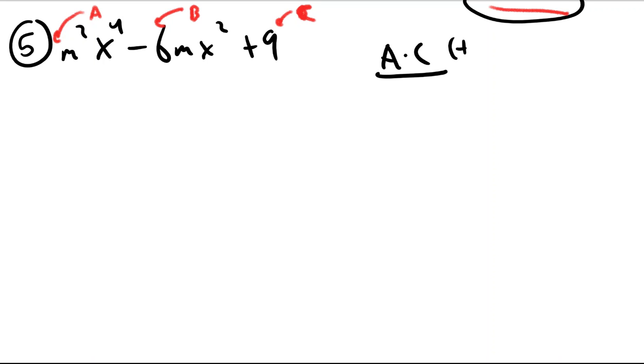I'm supposed to find two numbers that multiply to give me whatever A times C is. And A times C would be 9 in this question, 1 times 9. But add up to B, which is negative 6.